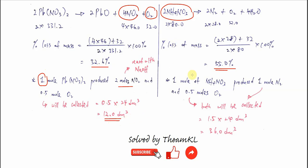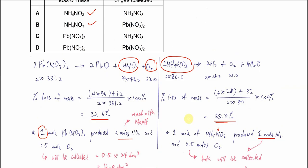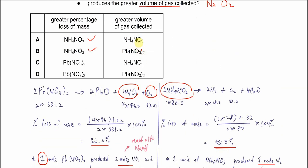For the ammonium nitrate, one mole of ammonium nitrate will produce one mole of nitrogen and 0.5 moles of oxygen. Total moles of gas is 1.5 moles. Times 24 dm cubed is 36 dm cubed. So the ammonium nitrate will be the one that has greater volume of gas collected. So the answer is A then. That's all, thank you.